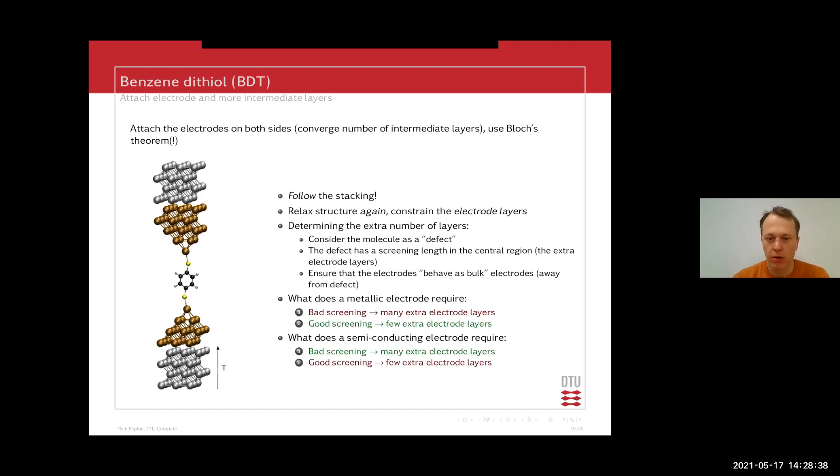Okay, so the answer is that the metallic electrodes, they require, they have a very good screening, so they require very few extra electrode layers. So here in this case, you have three extra electrode layers in the top part and only two layers in the bottom part. That may be okay in this case, actually.